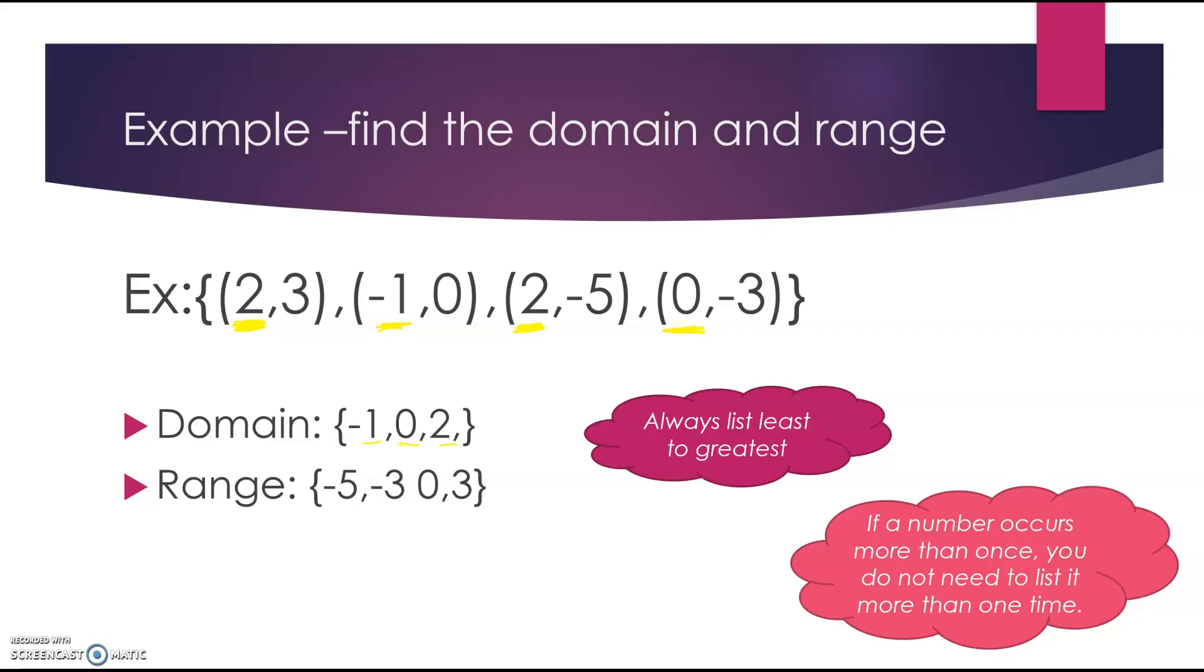Okay, my range values. My range values were 3, 0, negative 5, and negative 3. So I'm going to list them least to greatest, and I didn't have any repeats, so that doesn't matter. So negative 5 is my smallest, then negative 3, then 0, and then 3.